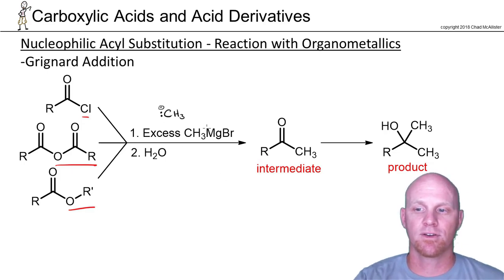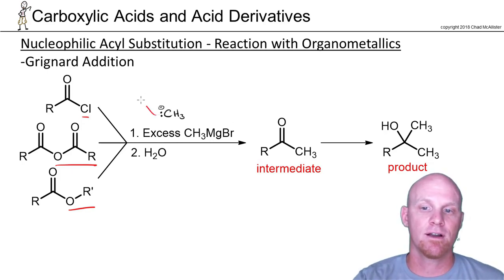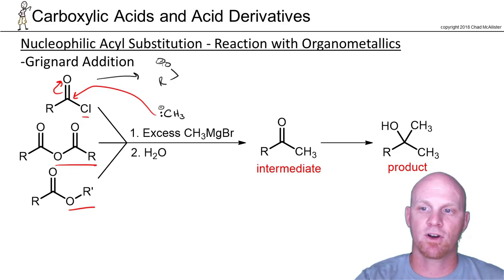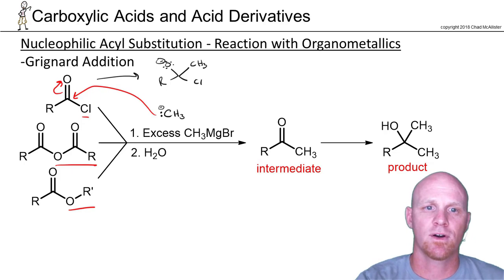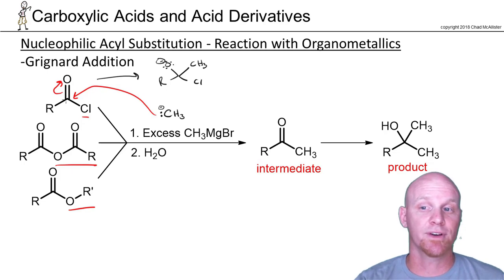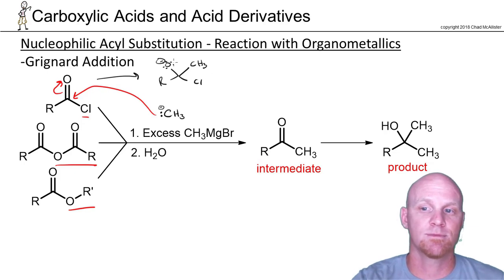Methyl magnesium halide is the equivalent of having a methyl anion, and we're going to do nucleophilic attack and kick the electrons up. We'll map out the mechanism: there's a negative charge on oxygen, the methyl group is attached, and the chlorine is still attached. We get a tetrahedral intermediate — the reactant is sp2 hybridized and trigonal planar, and so is the product of this step, so having an sp3 hybridized tetrahedral intermediate is unique.